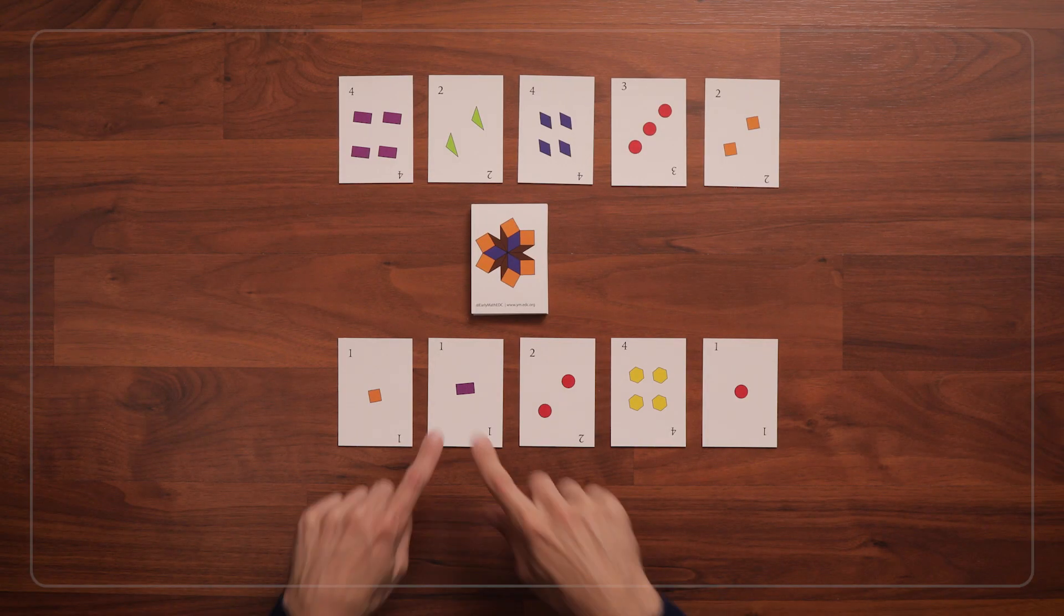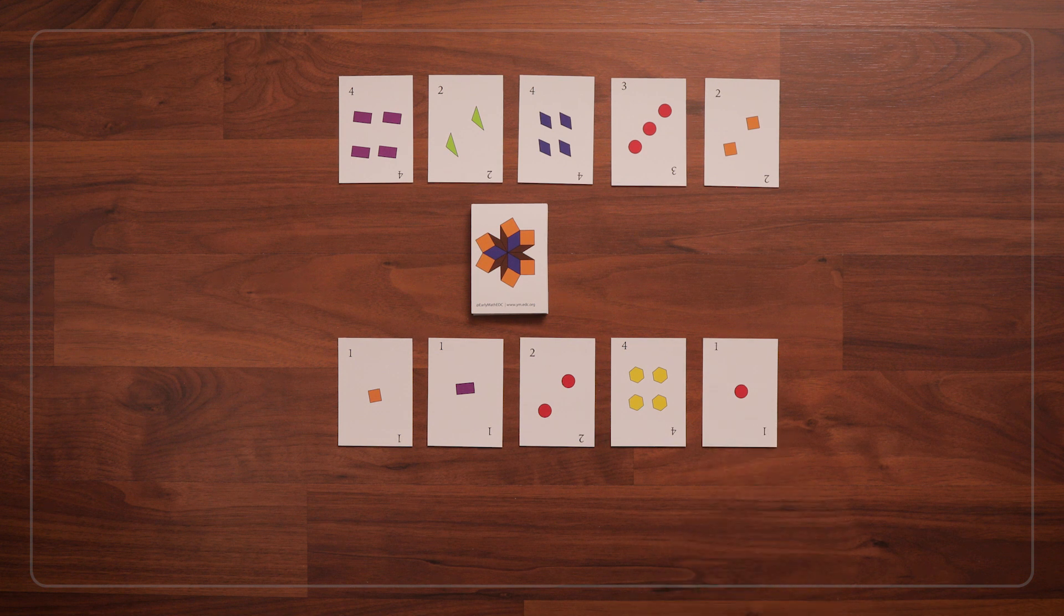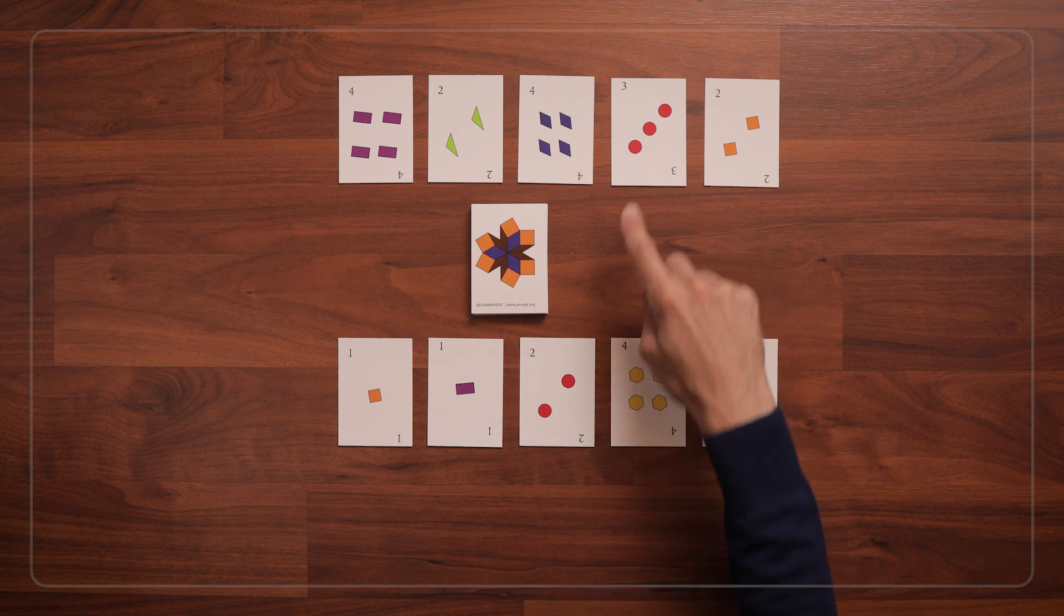The other way to play go fish with these shape cards is to match pairs of cards according to the shapes that are on the cards. It's the same gameplay rules as before, but now we're asking if other players have matching shapes.